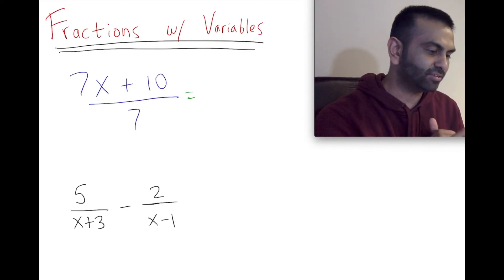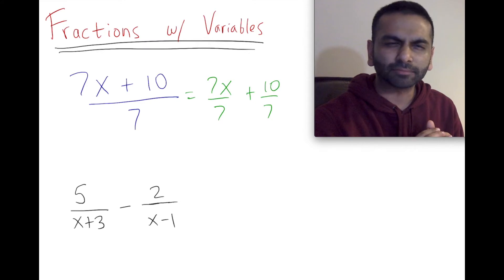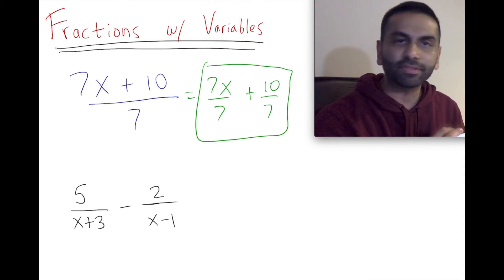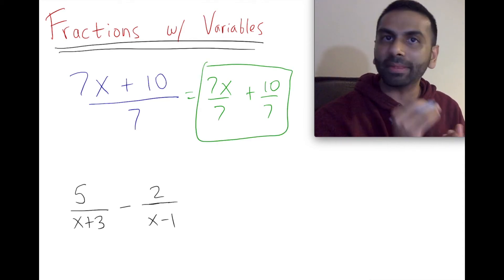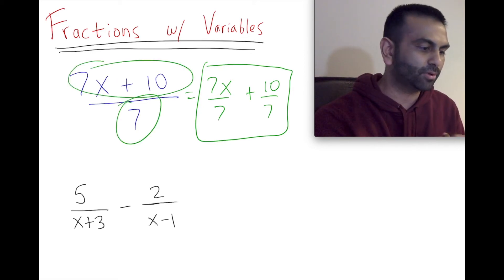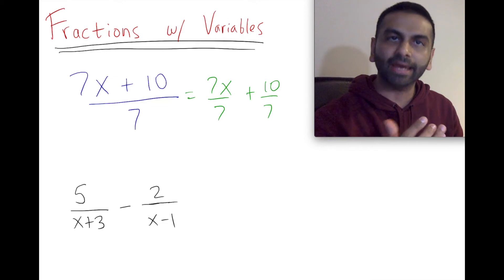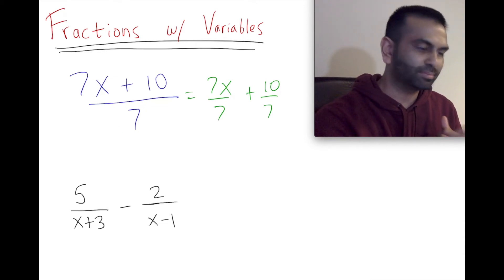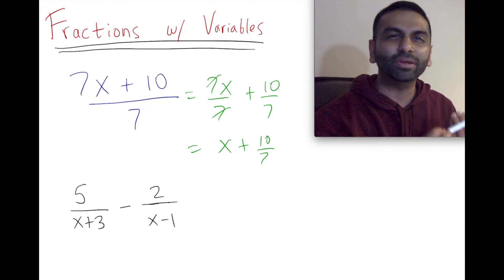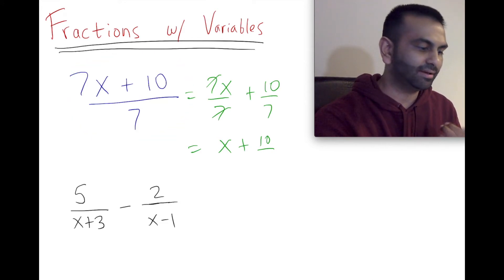You could rewrite this fraction as 7x over 7 plus 10 over 7. The reason we can do this is literally the way we add fractions in reverse. If you have the same denominator, you can split up the numerator. Once you do that, looking at this term you can cancel the sevens, and that would then just be x. So you have x plus 10 over 7. That's the only way you can cancel the sevens - otherwise you can't just directly cancel them to get x plus 10.